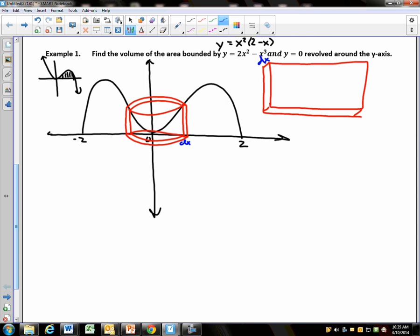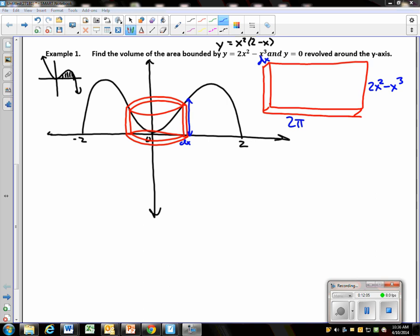Now I have a next part. I want to look at this height. Well, the height of this rectangle that I've unraveled is the same as that, right? The height of the function. So the height is 2x squared minus x to the third. Now all I need is the length of that rectangle. The length is the same as the circumference, which is 2π times my radius.